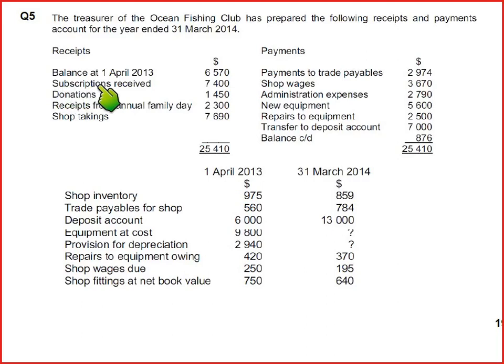The money received includes subscriptions — fees charged to members for services provided. Since this is a fishing club, we charge members for fishing facilities. There are also donations, and we have already discussed that there are two types: revenue receipt and capital receipt. If the question is silent about which type, we always assume it is a revenue receipt, charged to the income and expenditure account.